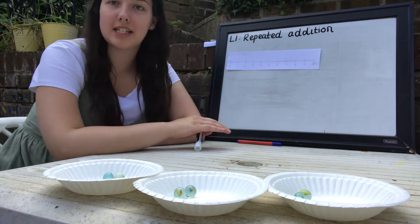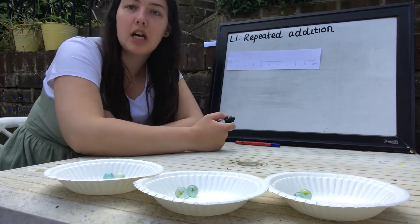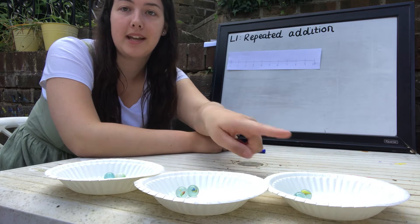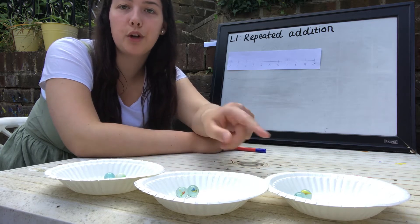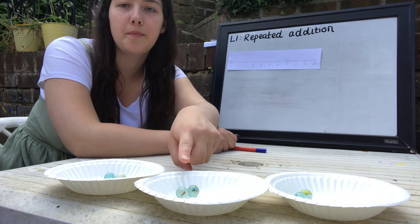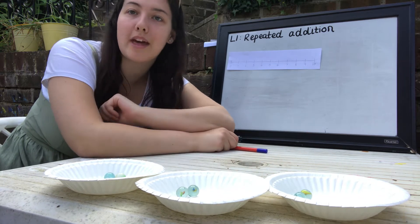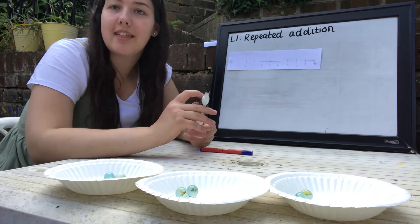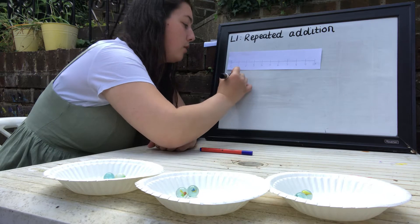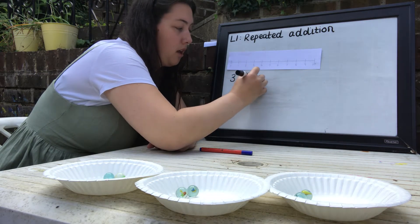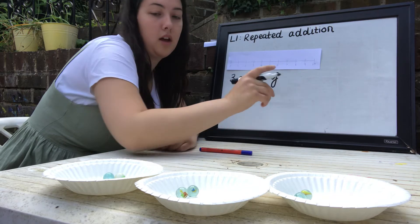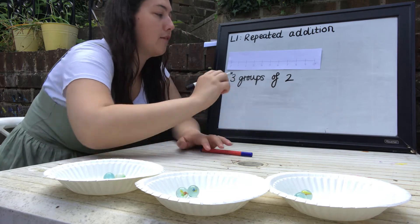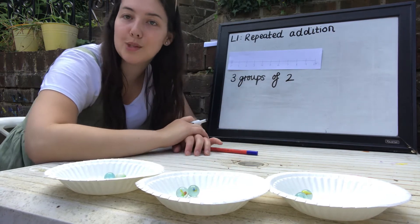We're going to start off exactly like we did last week with our equal groups. In front of me I have got three equal groups — one, two, three — and in each of my equal groups I have got two marbles: one, two; one, two; one, two. They're all the same, they are all equal. So I can write on the board that I've got three groups of two marbles.